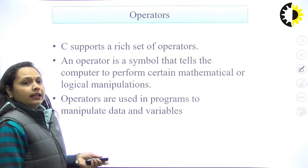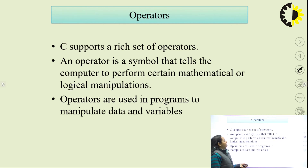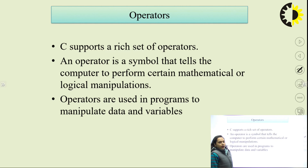In C, whenever we talk about C, it is a language which is understood by the computer. Operators are just like the variables or alphabets which work for the language. C supports a rich set of operators — these are basically the symbols on which various logical manipulations are done. Based upon the operators, we can calculate various data stored in the variables.